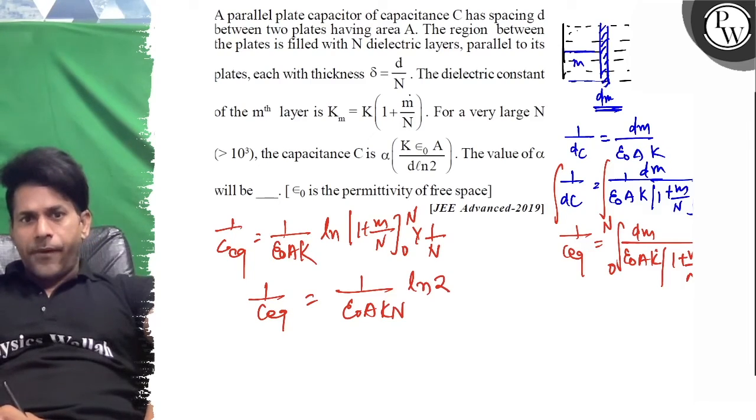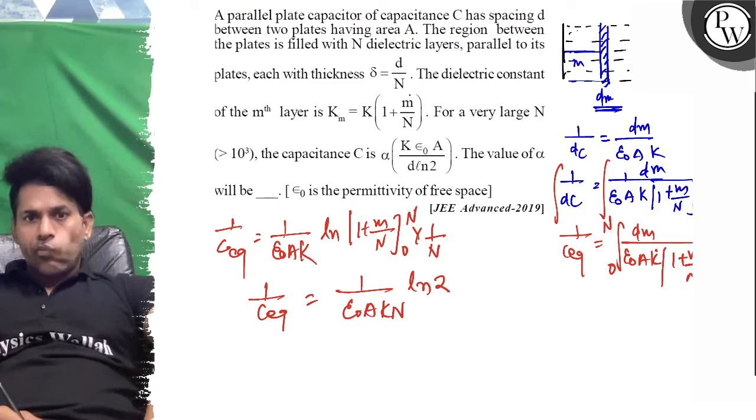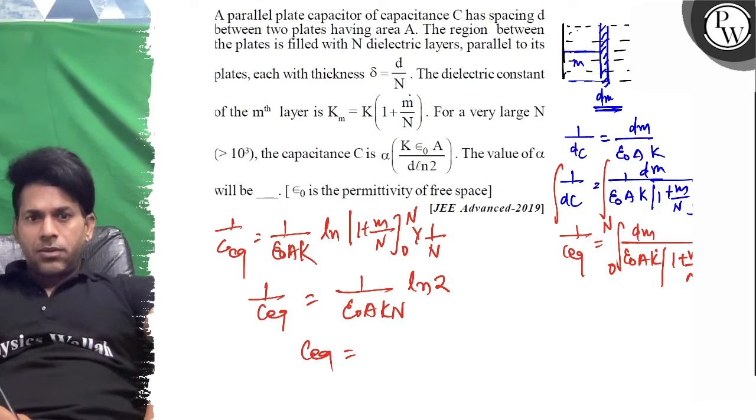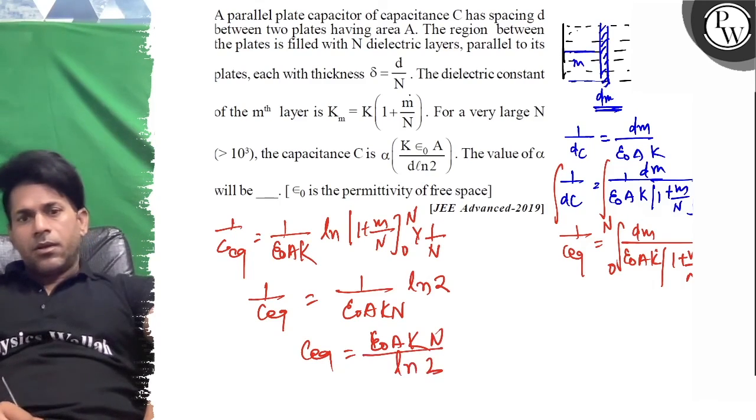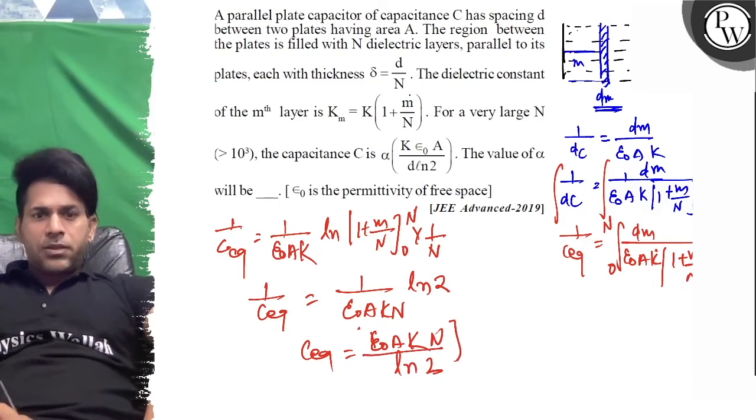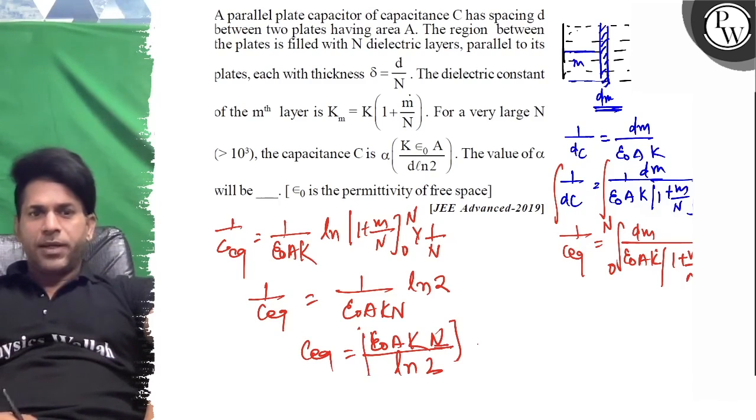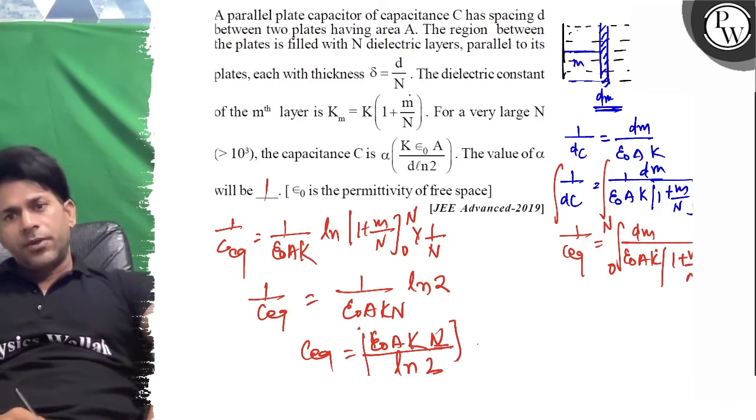Now if you see this, C_equivalent will be equal to ε₀AK·N divided by ln 2. So here, this means that the alpha we assume, if we assume this, the answer will be our one. All the best to you.